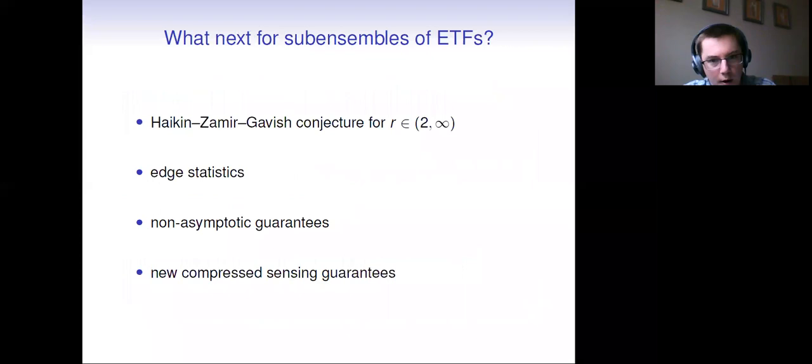So there's a lot more to do here. The Huygens-Zamir-Gavish conjecture really should be something that's considered and studied for R greater than two. We only handled R equals two case. I don't have edge statistics for you. I don't have non-asymptotic guarantees. And it would be awesome to rope all of this into some new compressed sensing guarantees. I think that's the ultimate goal here. The reason that I said that we should care at the beginning of the talk.